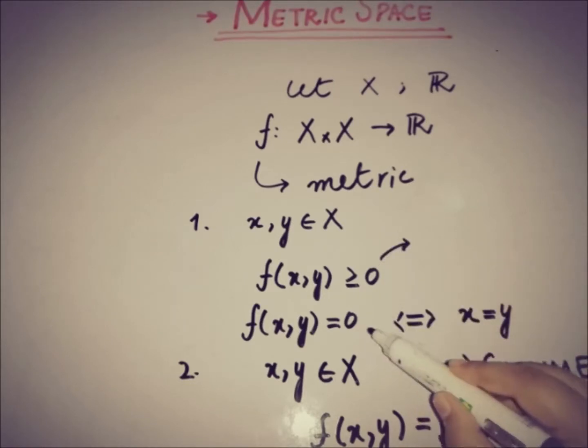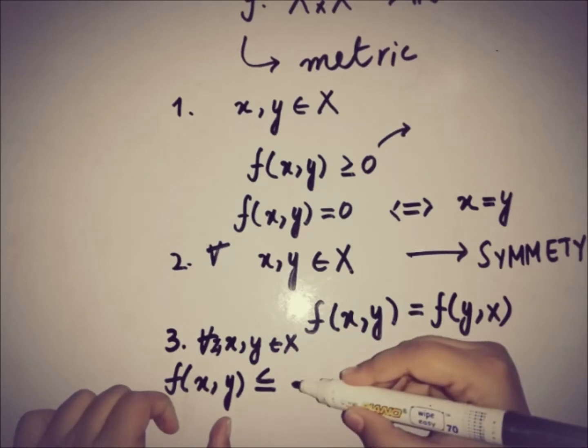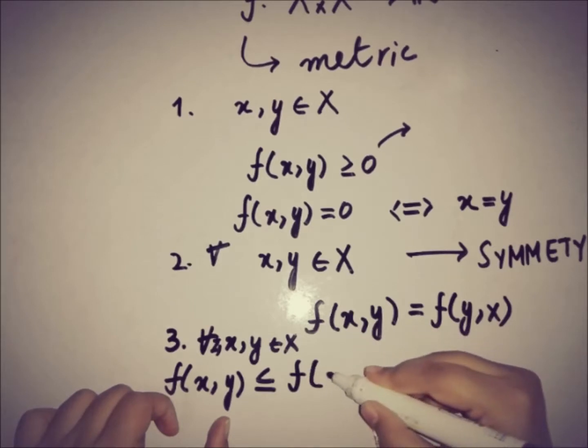And if the function has zero value then for all x and y we can say that these two values are equal. And the third property is if you take three elements from the set X—x, y, and z—the value of f(x,y) when applied must be less than or equal to f(x,z) plus f(z,y).